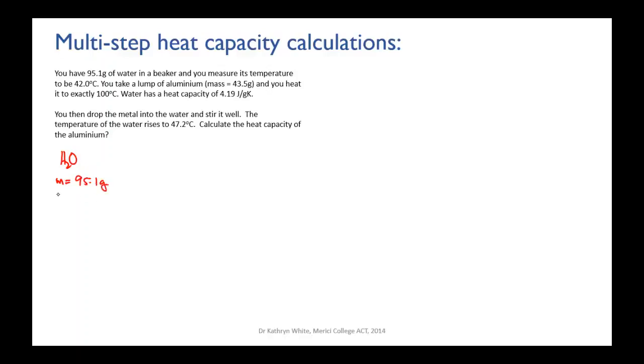We know that the mass of the water is 95.1 grams, we know that the heat capacity of the water is 4.19 joules per gram Kelvin.